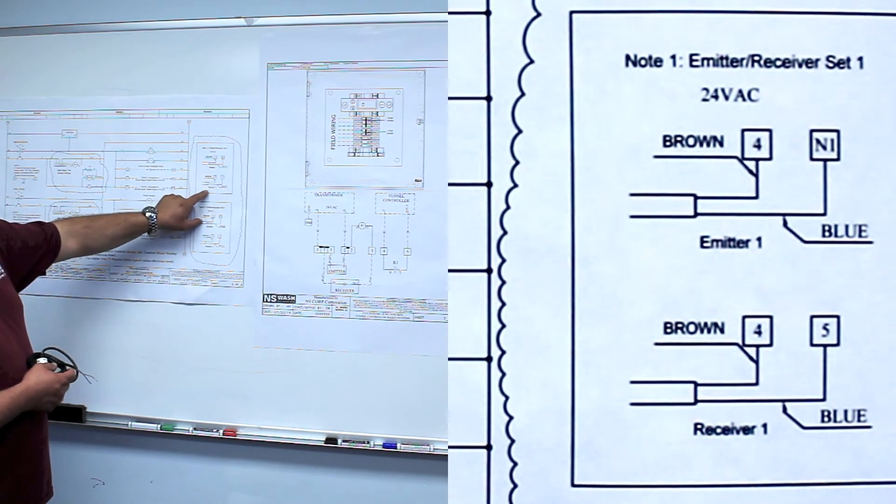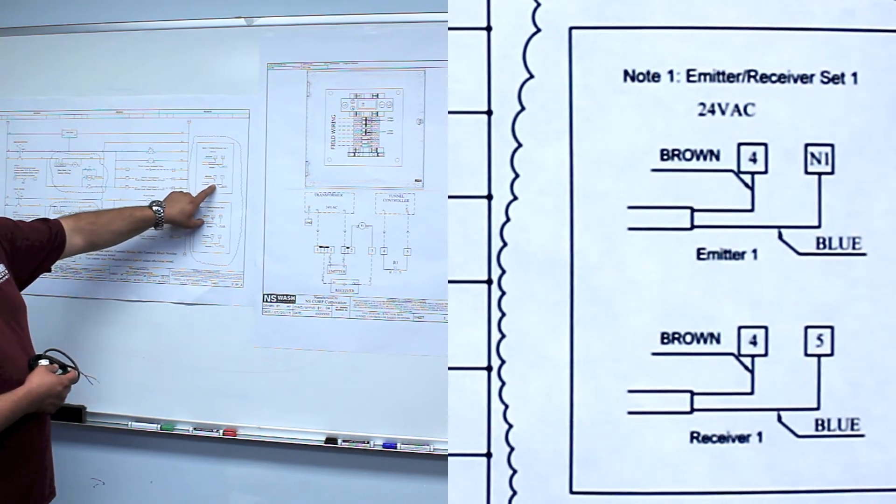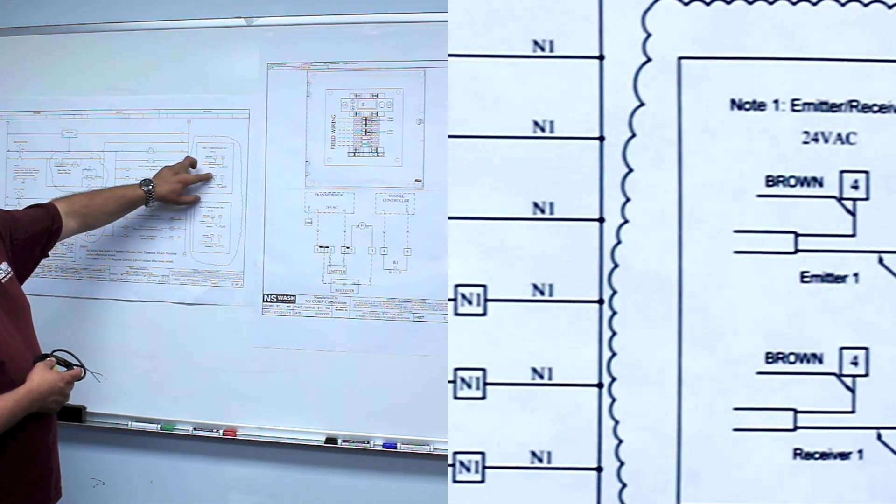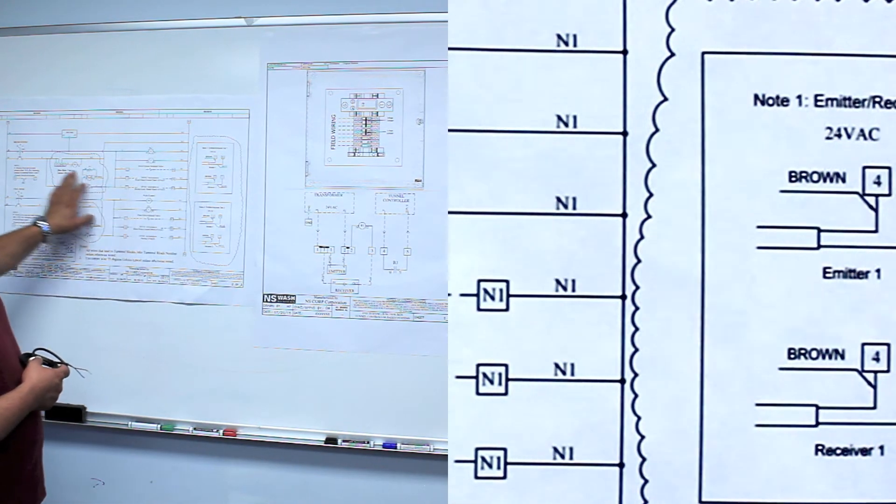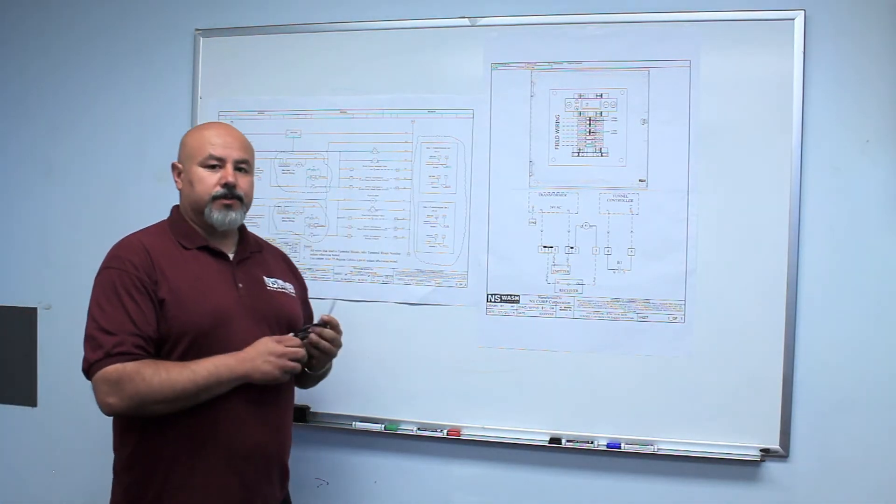Now, your receiver, brown wire goes to terminal four, and the blue wire goes to terminal five. As it's stated here, number four is the hot side of this control panel. So the brown wires always go to hot.